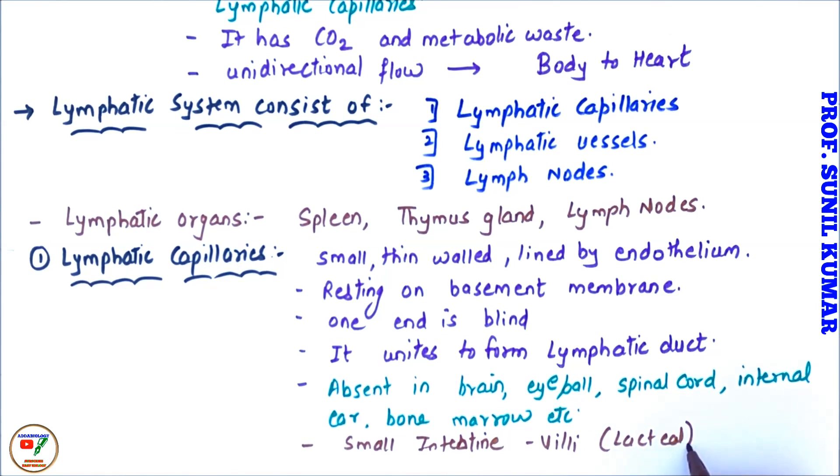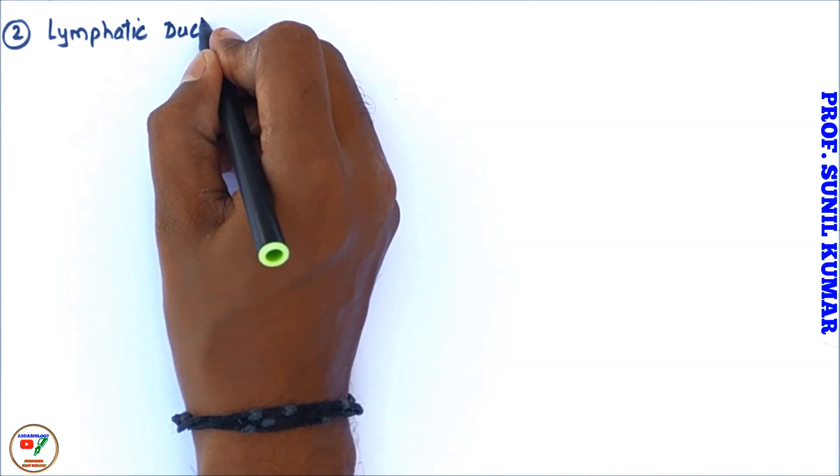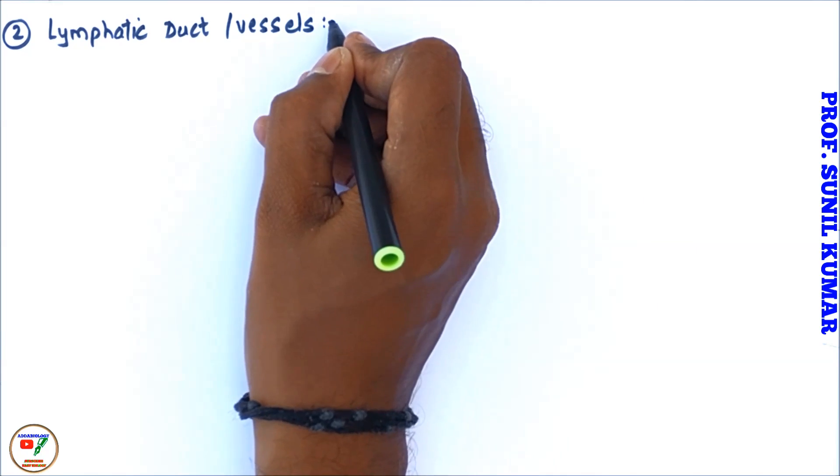The most common lymphatic capillaries that we see: we can say it is seen in small intestine. We have villi, the finger-like projection which is also known as lacteal.